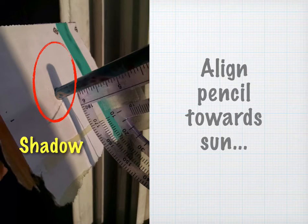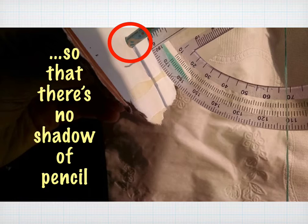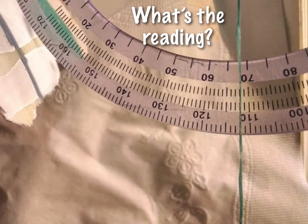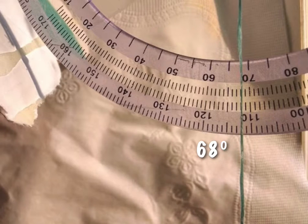So it's real simple. At the appointed time, you are going to align your pencil towards the sun so that the shadow disappears. Then, you're going to take the reading off of your protractor. So what is the angle on this protractor? It is 68 degrees.